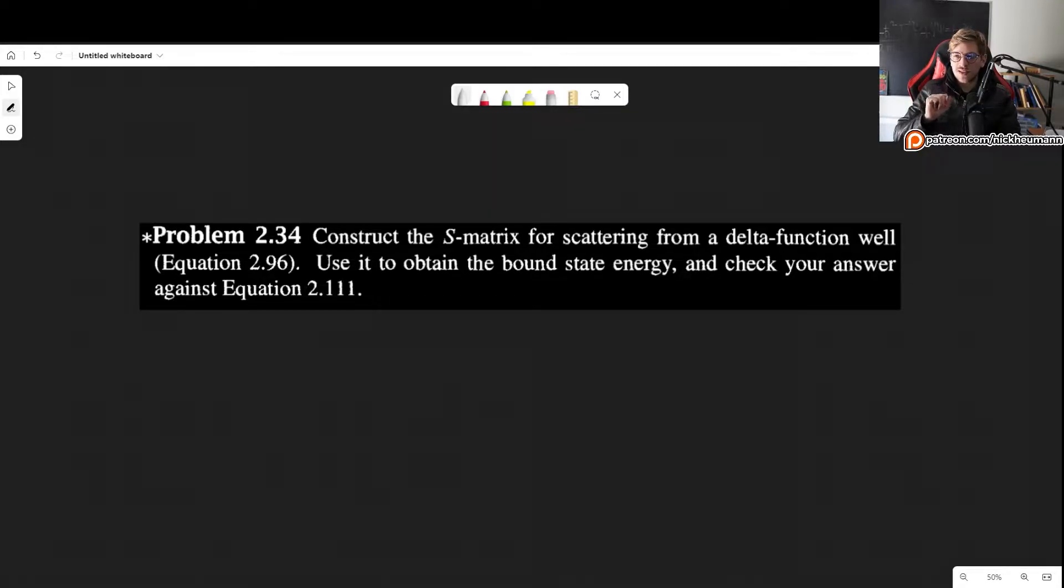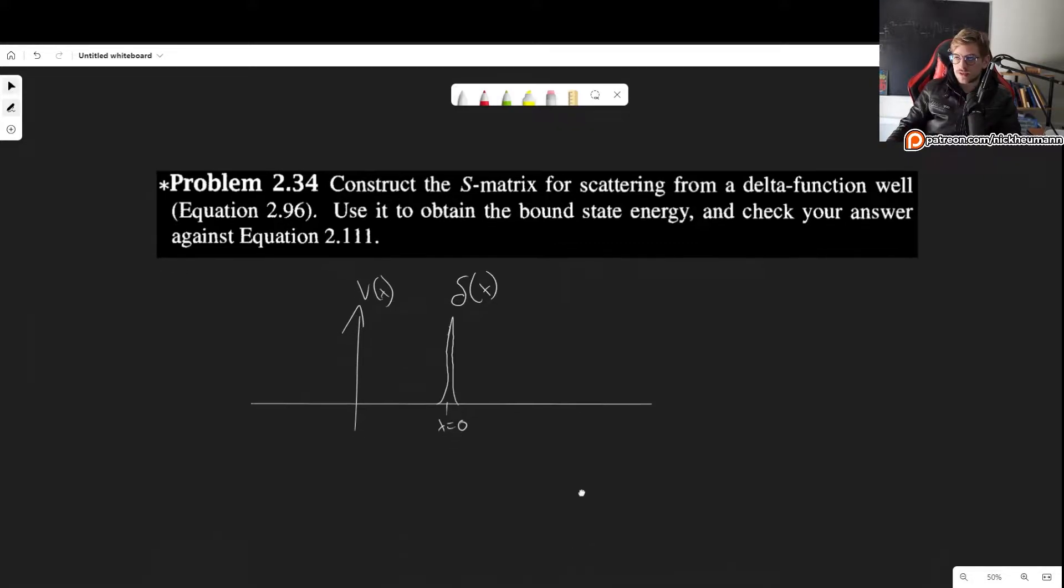Now this problem states the following: construct the S matrix for scattering from a delta function well and use it to obtain the bound state energy and check your answer against what we had found before. In this case, of course, we have what we have seen in the past. So basically we have some delta function, let's say it's centered at 0, so at x equals 0. So this is our potential. And we want to find the bound states.